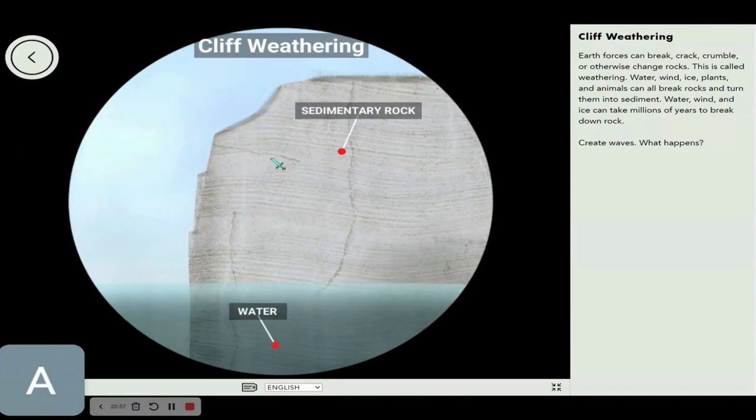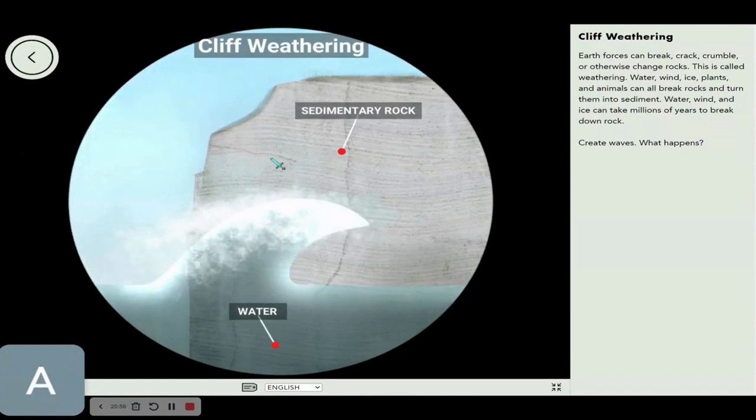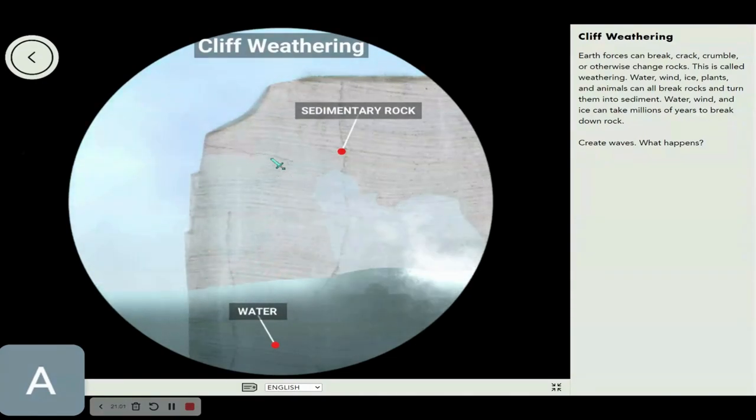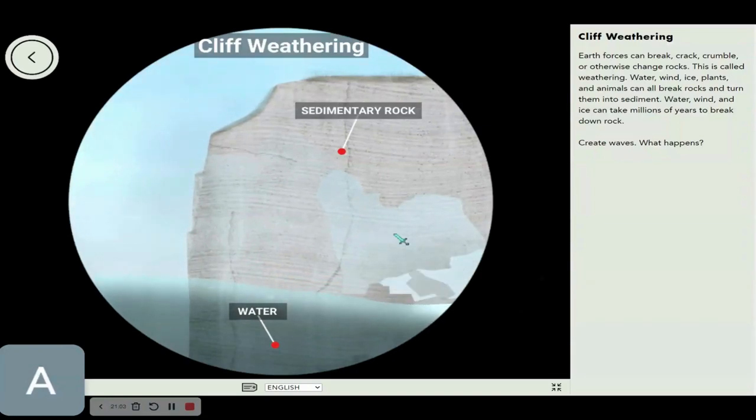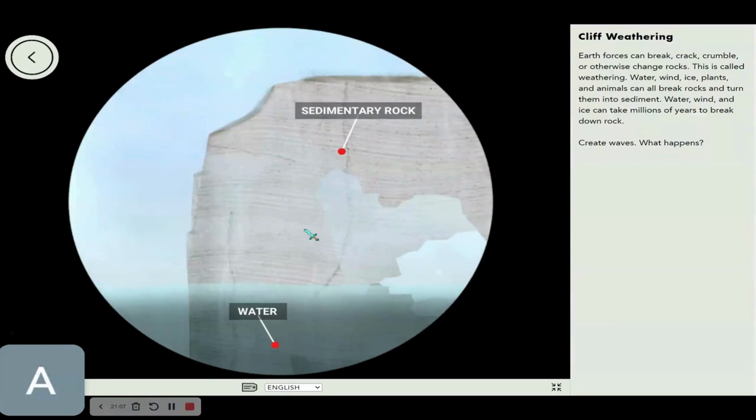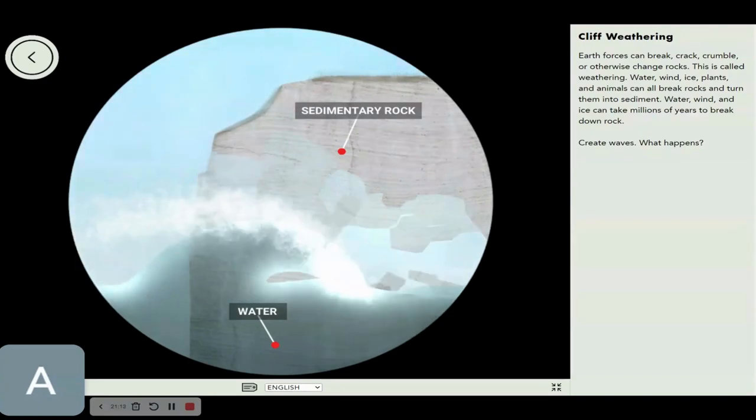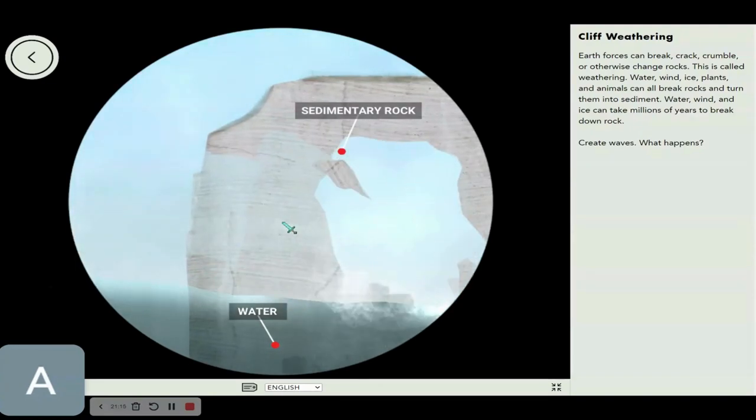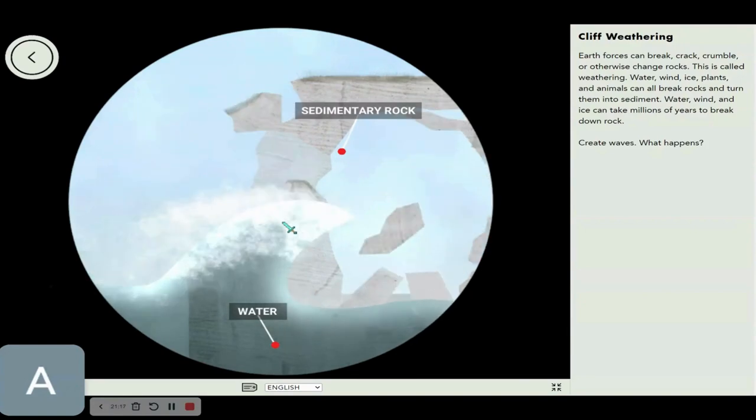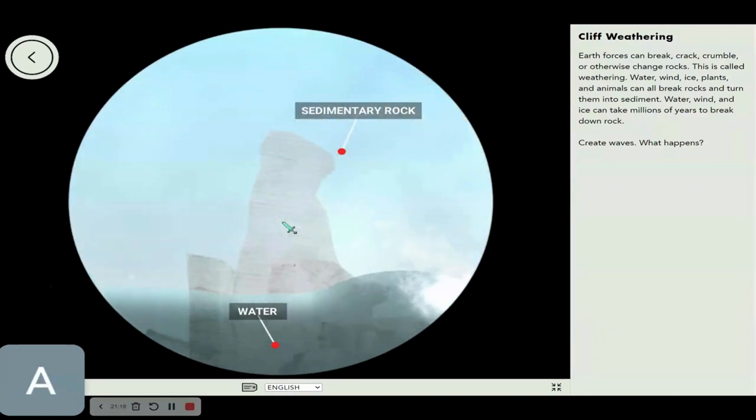Cliff weathering. Earth forces can break, crack, crumble, or otherwise change rocks. This is called weathering. So when I make a wave, this rock becomes easier and easier to break, until only a small bit of rock is left.